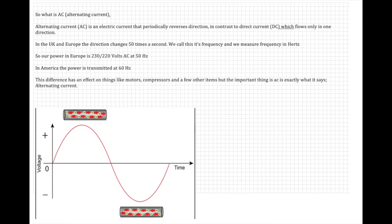So what is AC, alternating current? Alternating current, AC, is an electric current that periodically reverses direction. In contrast to direct current, which is smooth, as we spoke about earlier, and only in one direction.